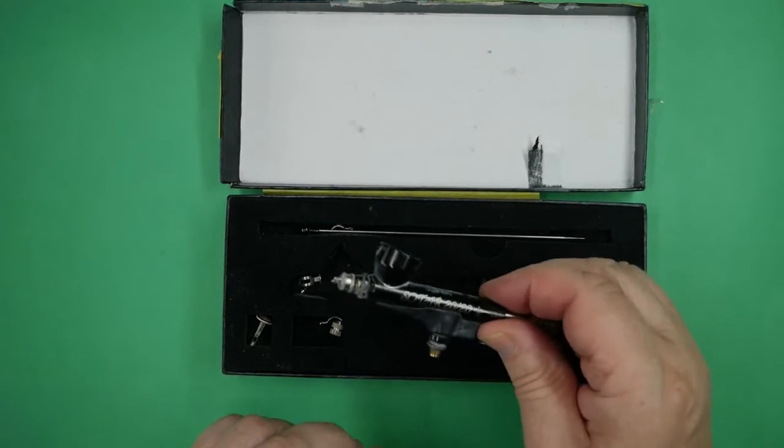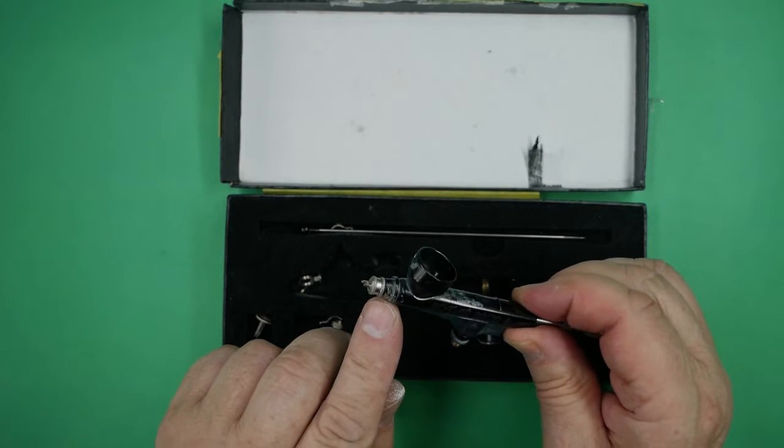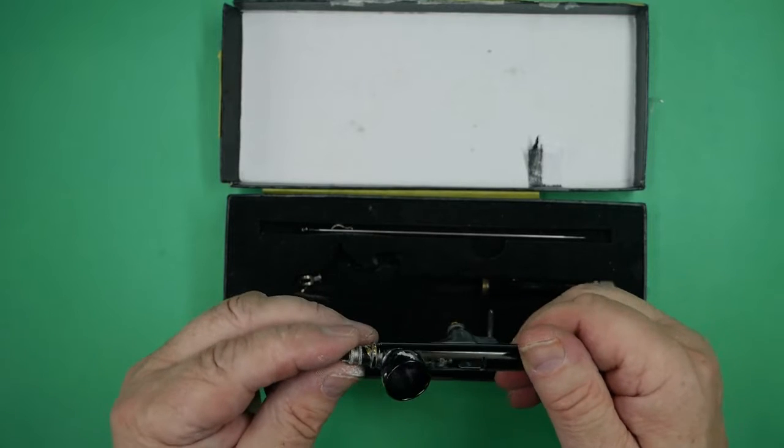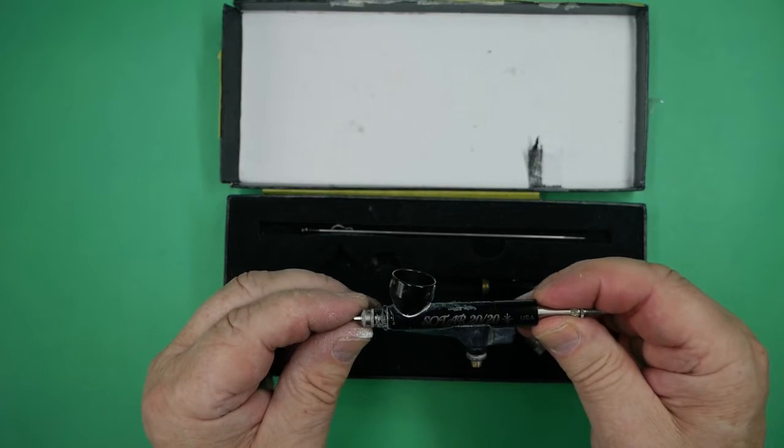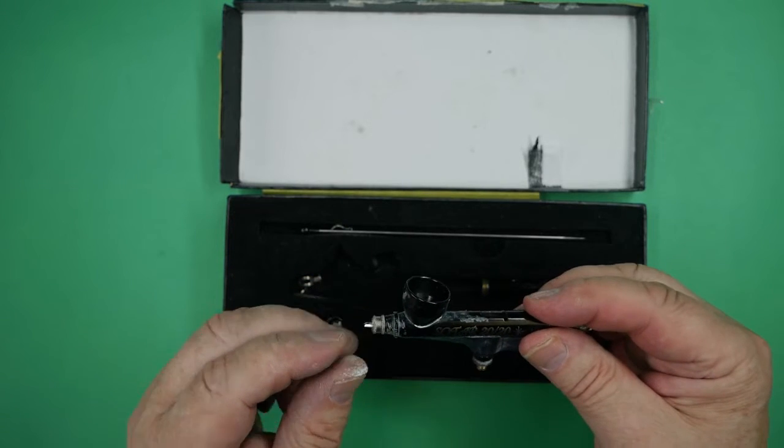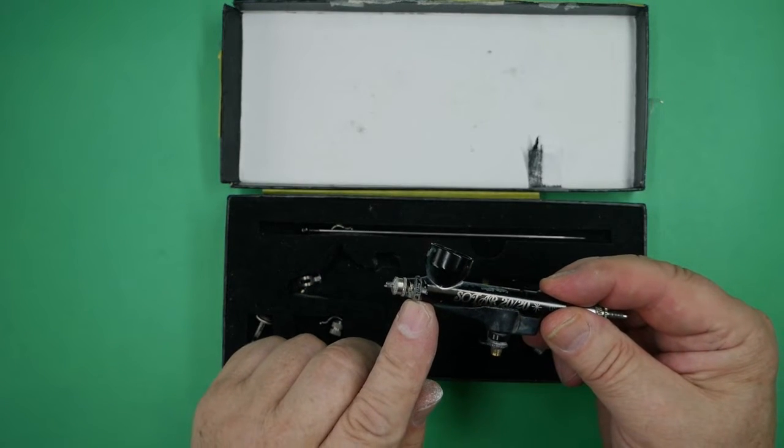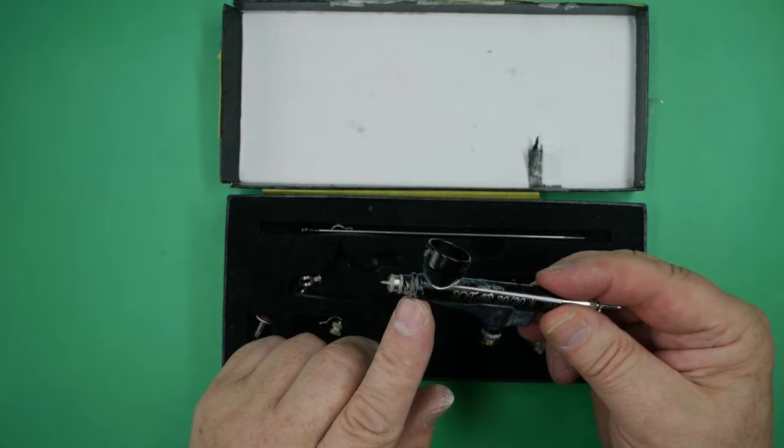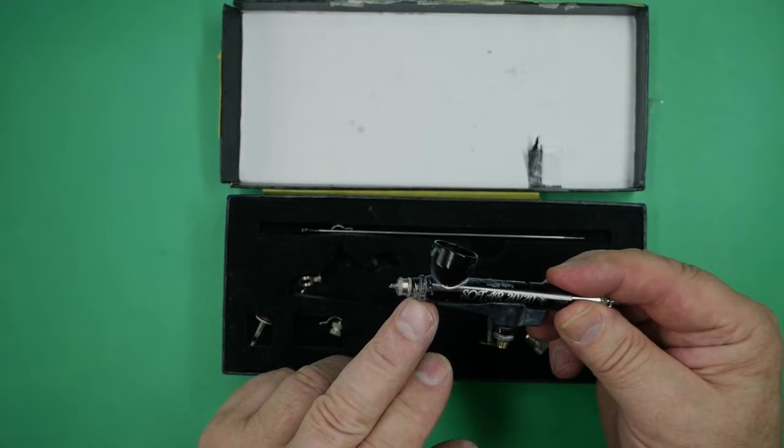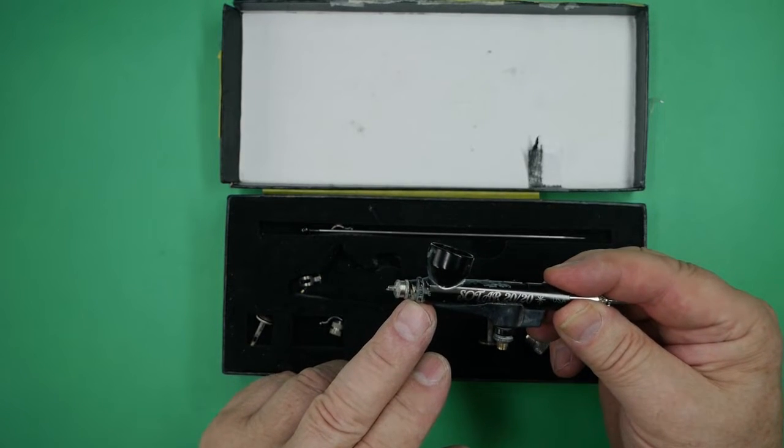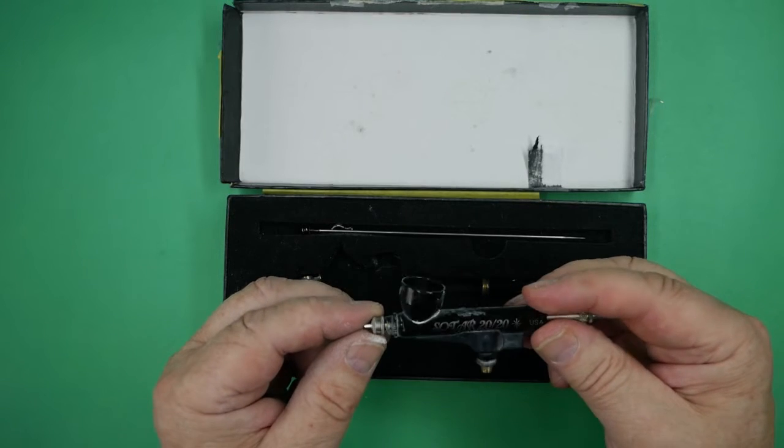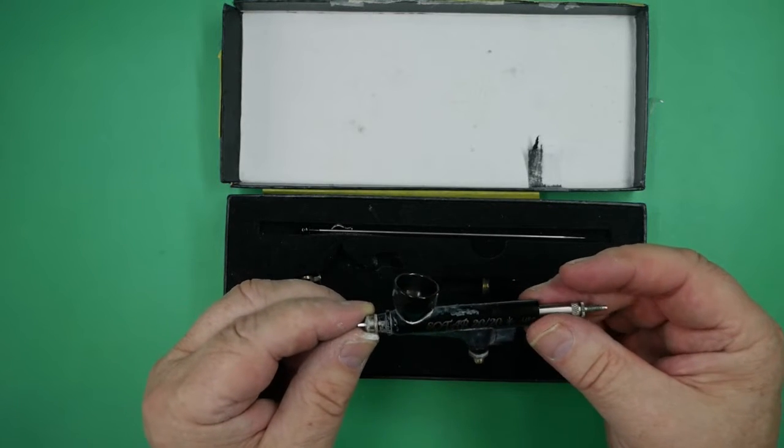He thought that the new body which is all black and fixed head was the same as this SOTAR that was manufactured before September 2018 where the head actually comes apart, but the new version has a fixed head and he didn't realize that until he read the instructions, by which time he'd already damaged the looks of the airbrush.